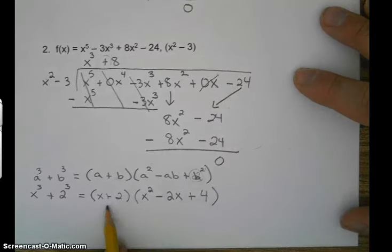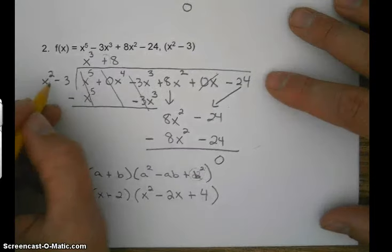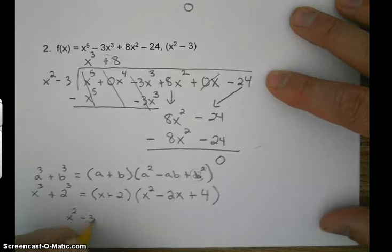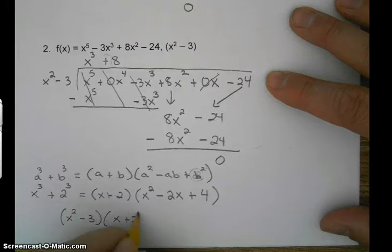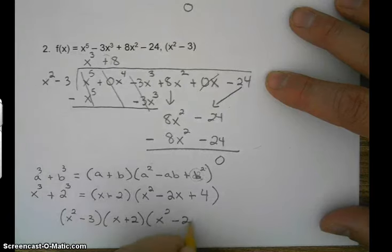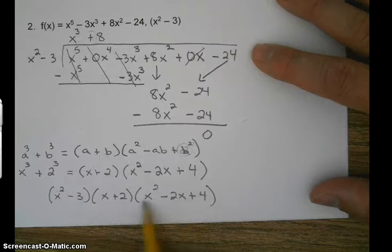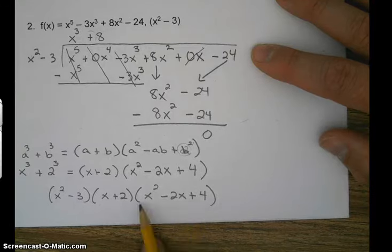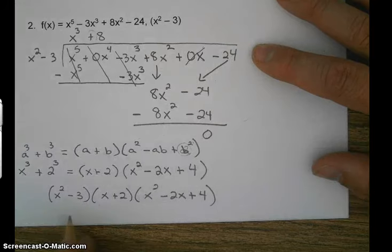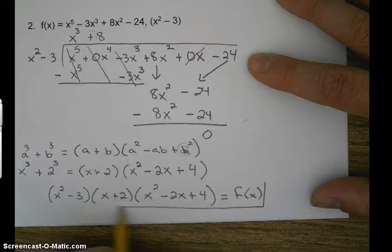So what I just did here is I factored the sum of two cubes. So now what do we have? So we have x squared minus 3 as one factor, x plus 2 as another factor, and then we have this one. Now, since this is trinomial, it's quadratic, we could try the x on this one, but it's not. It's prime, so we can't factor it. So this is as far as we can go. Can't factor it any farther than that.